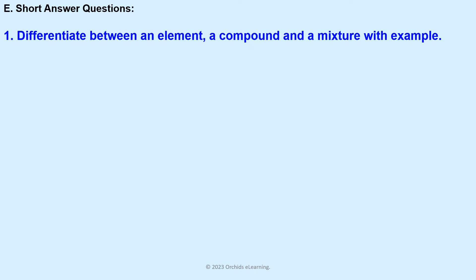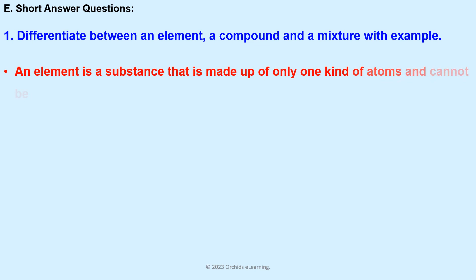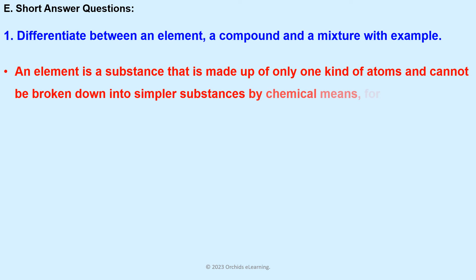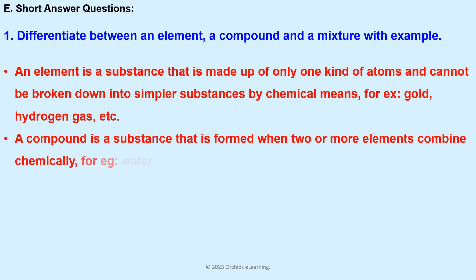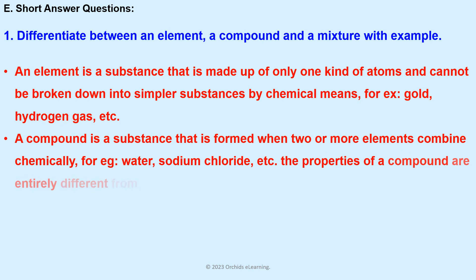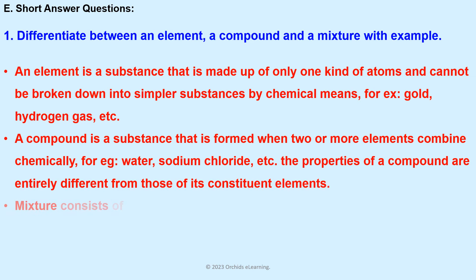Short answer questions: Differentiate between an element, a compound, and a mixture with examples. An element is a substance that is made up of only one kind of atom and cannot be broken down into simpler substances by chemical means. For example, gold, hydrogen gas, etc.